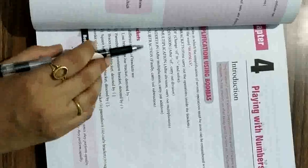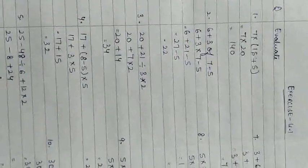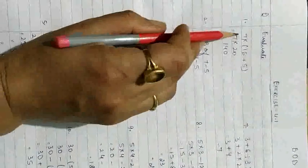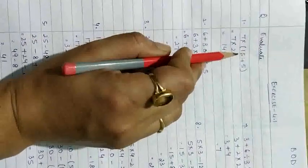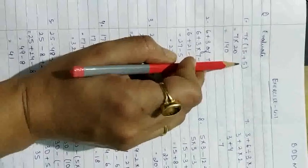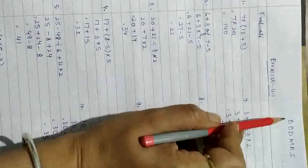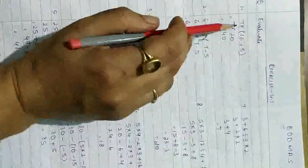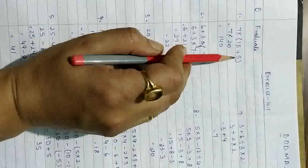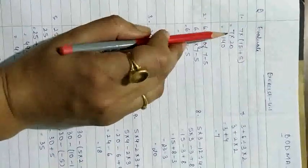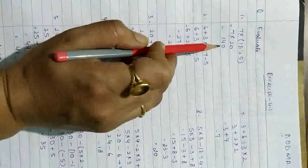We follow this BODMAS method whenever we solve our questions. Now Exercise 4.1. First question: 7 multiplied by bracket (15 + 5). According to BODMAS, first remove the bracket — 15 plus 5 equals 20. So 7 multiplied by 20 equals 140. That is our answer.